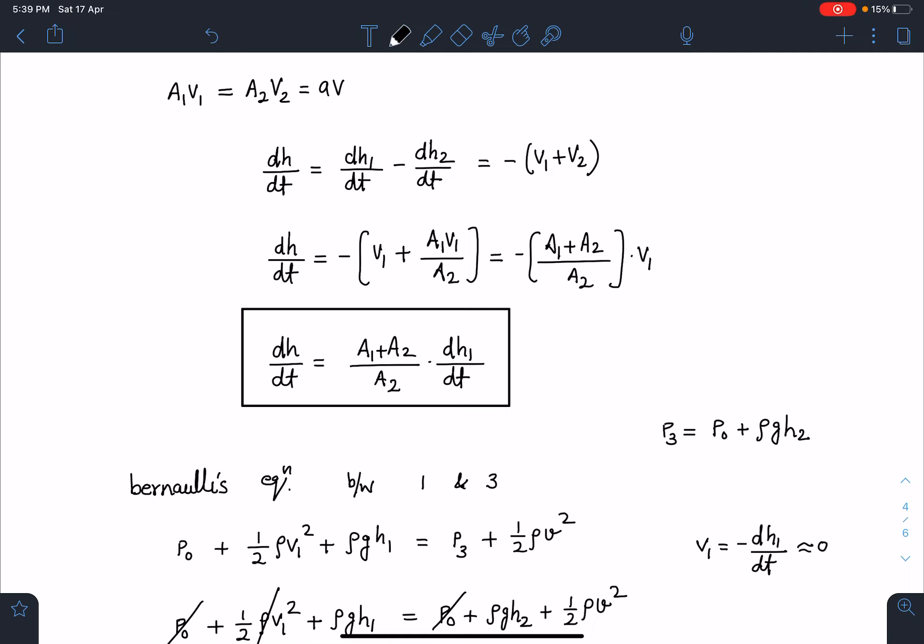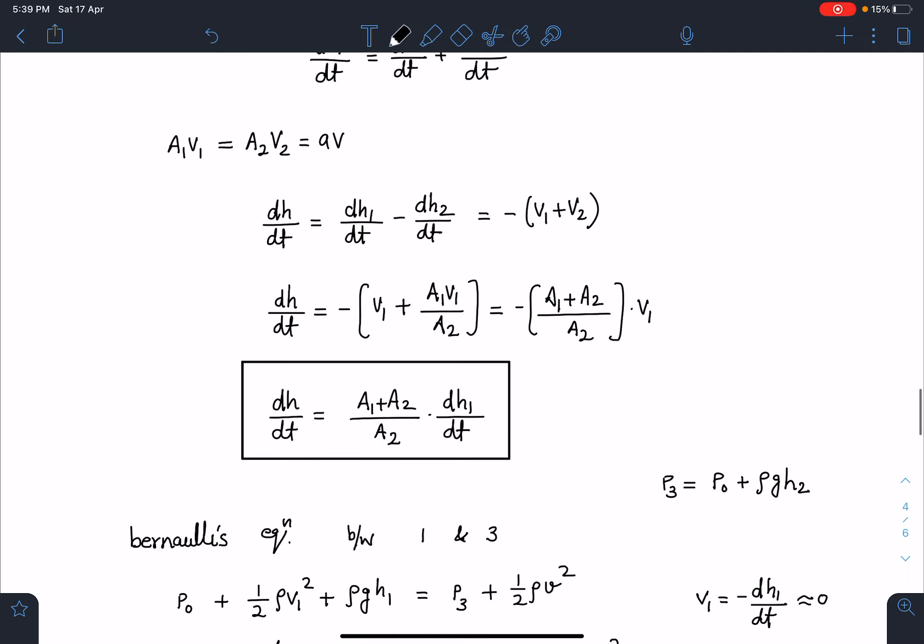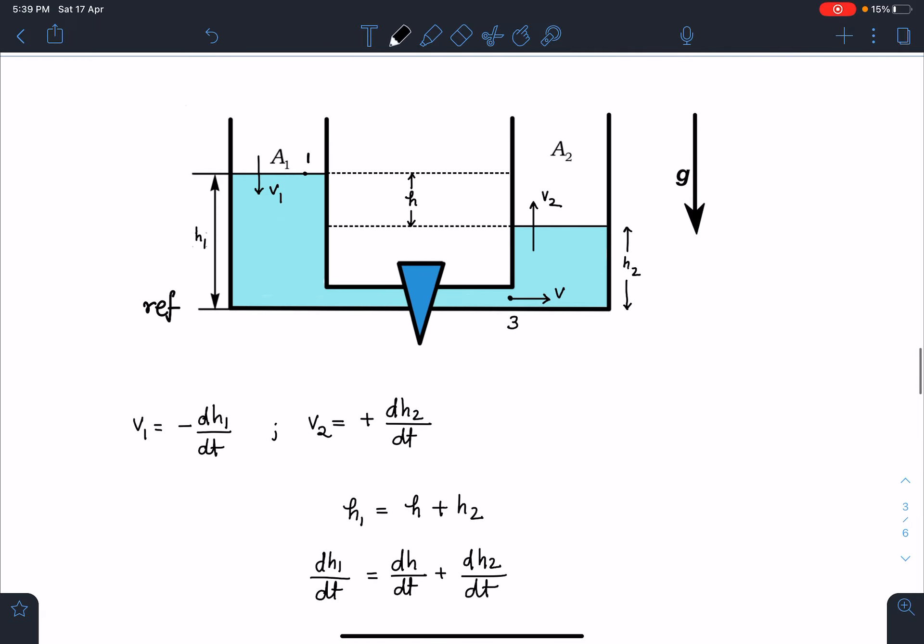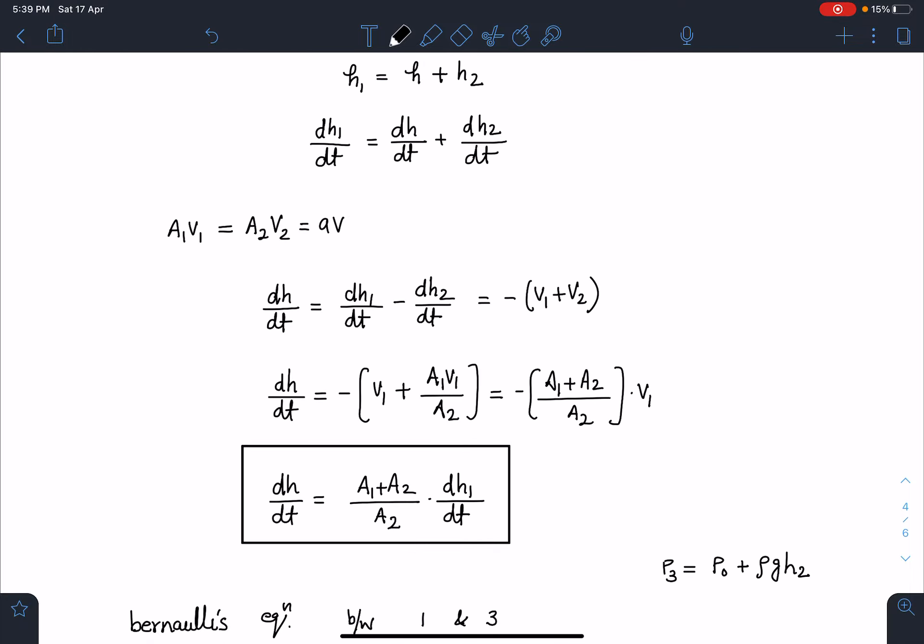V1 I can write as dh2/dt. Here I think positive sign only will come because dh/dt is also negative - h is going to decrease - and v1 is actually minus dh/dt, so this will bring plus sign here. So this is the relation I am going to have: dh/dt equals (A1 + A2)/A2 times dh1/dt.